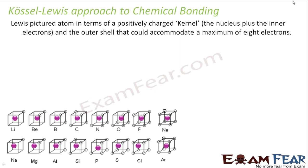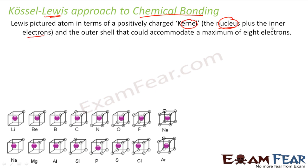Chemical bonding is something which exists in nature, and there are various theories to explain it. The first approach was the Lewis approach. What this guy did was he assumed that the nucleus plus the inner electrons form one kernel. The outer shell electrons can accommodate at the max 8 electrons. Please note that this is not true for all cases in real life, but this is a theory that explains most of the chemical bonding.